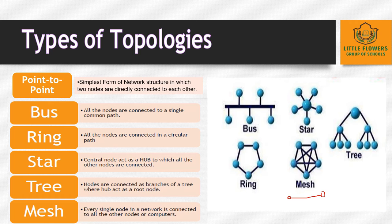In star topology, a central server acts as a hub and devices communicate across the network by passing data through it. It is easy to add new devices to the network. The configuration is very simple — a central node connects to all the other computers.